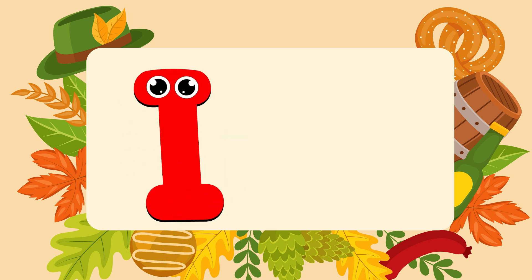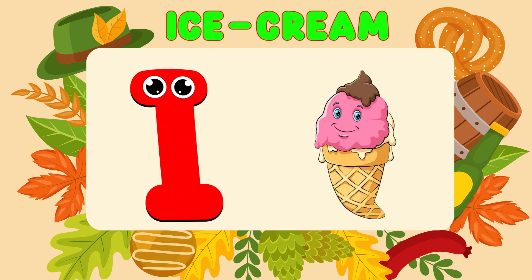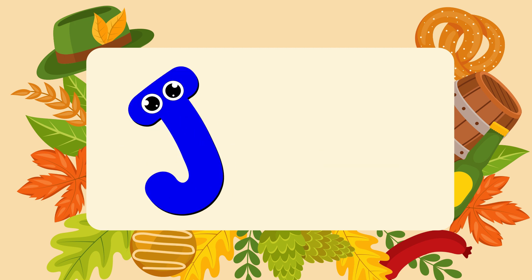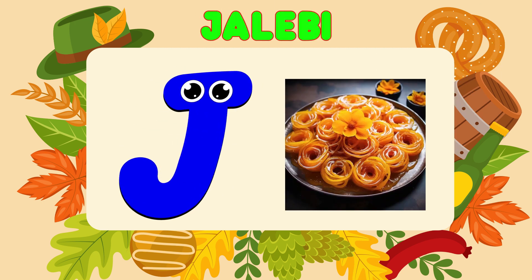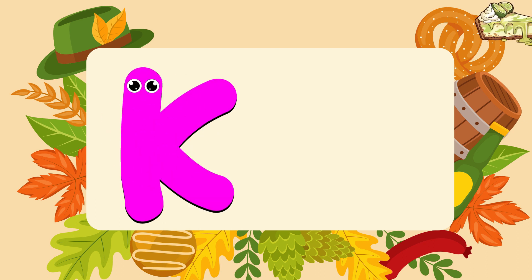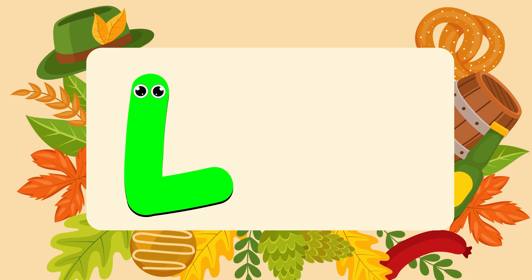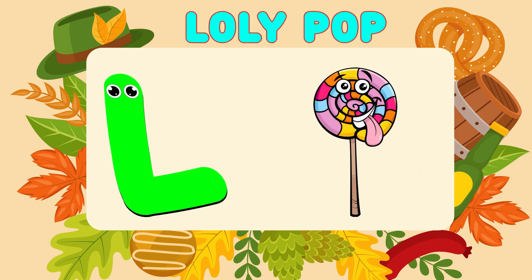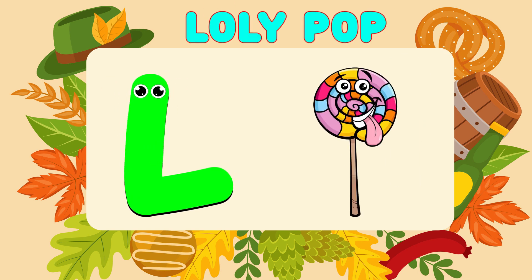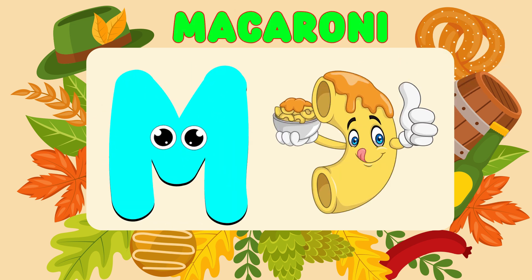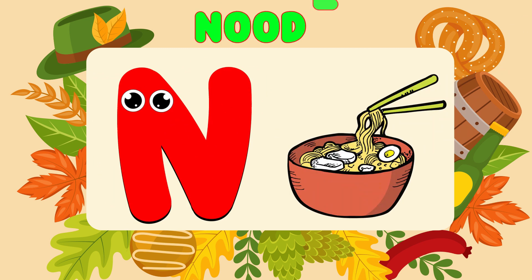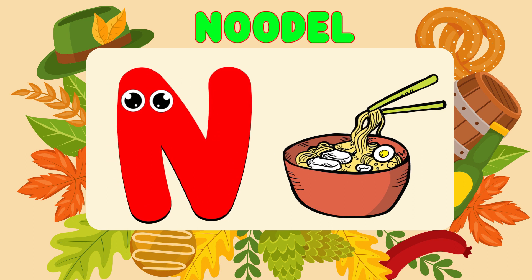I is for Ice Cream. I, I, Ice Cream. J is for Jelly Bean. J, J, Jelly Bean. K is for Key Lime Pie. K, K, Key Lime Pie. L is for Lollipop. L, L, Lollipop. M is for Macaroons. M, M, Macaroons. N is for Noodles. N, N, Noodles.